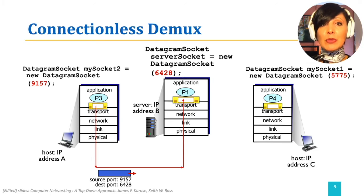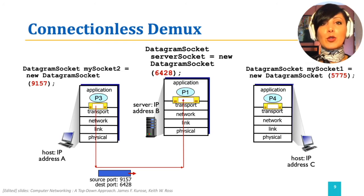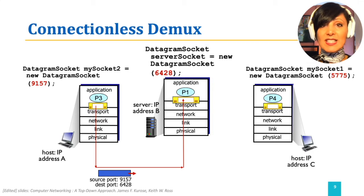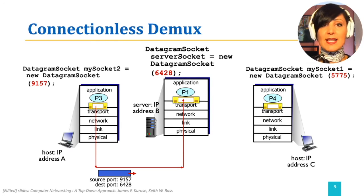After arrival of the datagram on the host with IP address B, the destination port number 6428 will be used to deliver the segment to application process P1. Connectionless transport, like UDP, will always deliver all segments that have destination port 6428, regardless of the source port or any additional information, to the same socket for the same process P1.